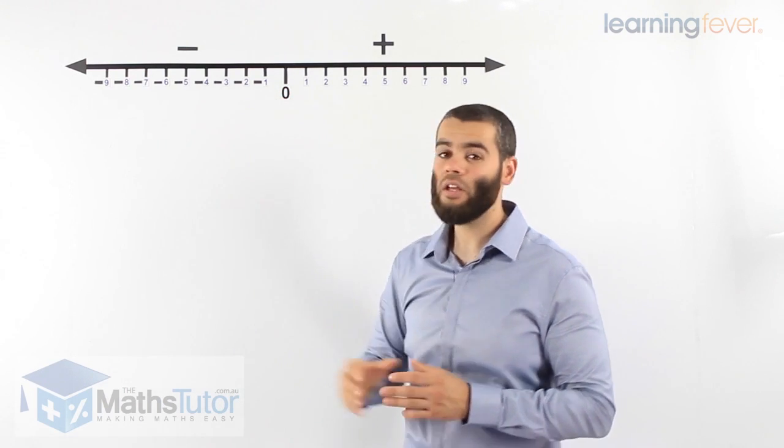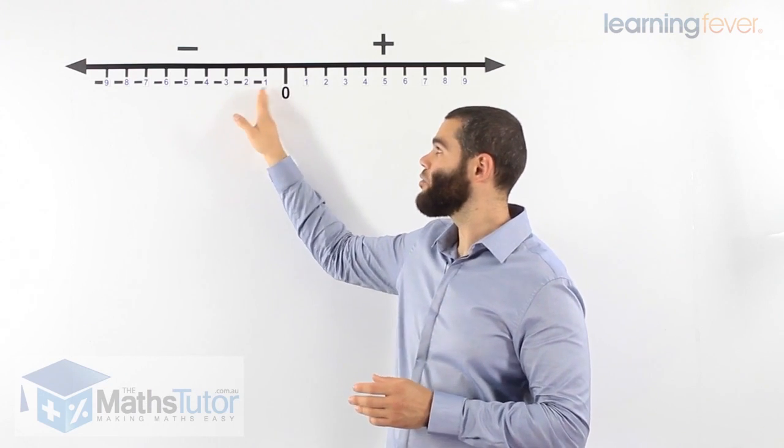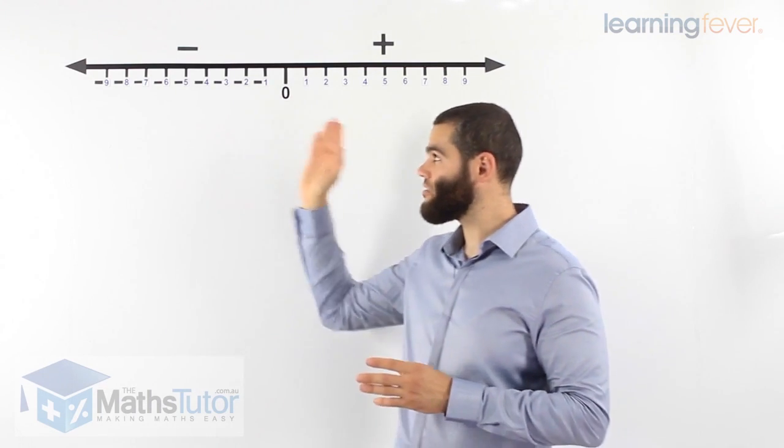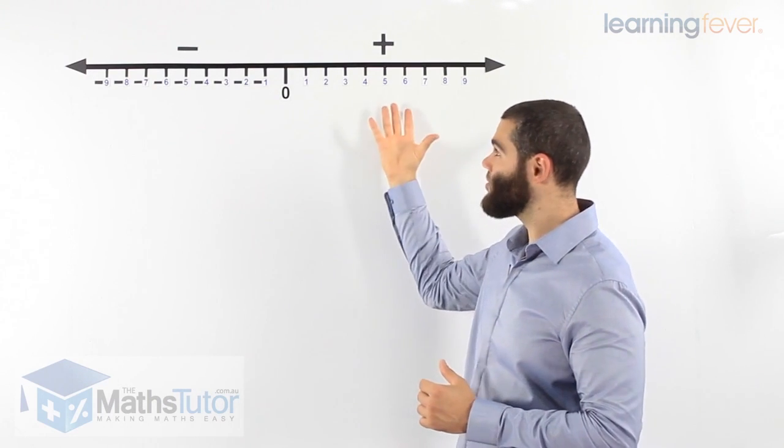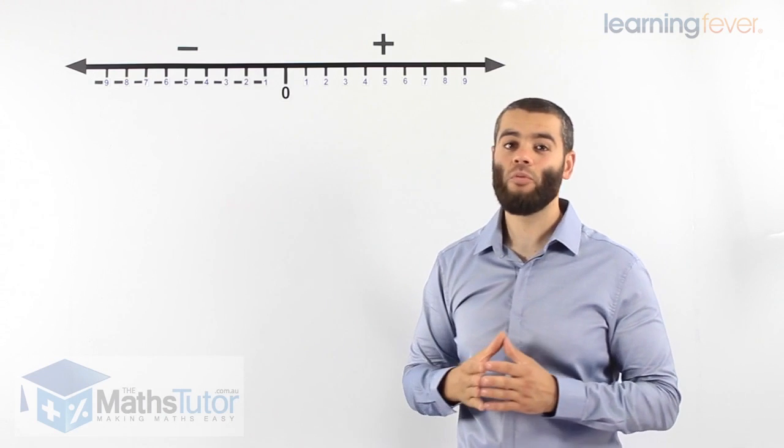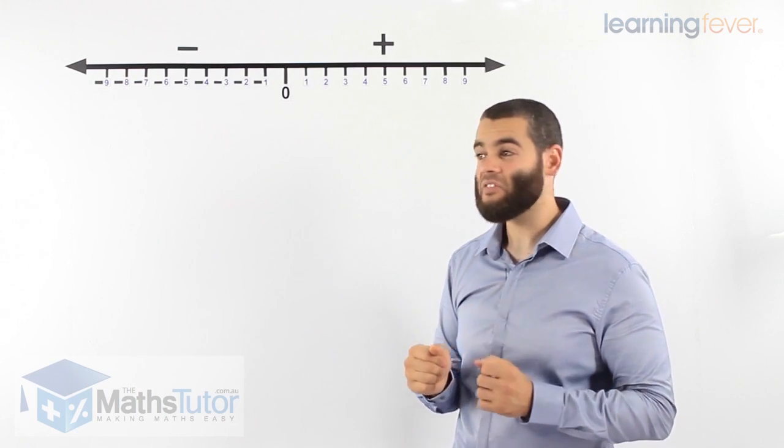then going down minus one, minus two, minus three, or negative one, negative two, negative three, going down, extending, and the arrow shows the numbers continue on. So on the right, we have the positive side, and on the left, we have the negative side.